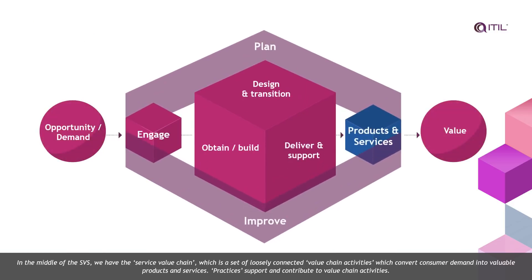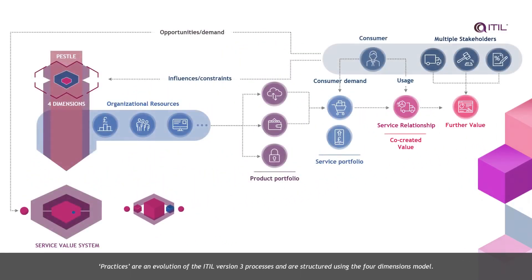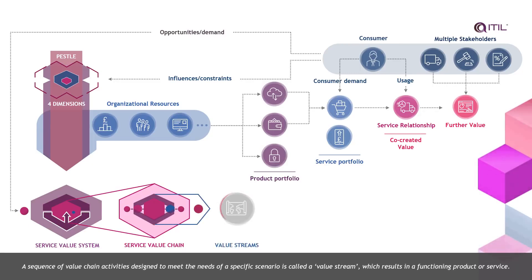In the middle of the SVS, we have the Service Value Chain, which is a set of loosely connected value chain activities that convert consumer demand into valuable products and services. Practices support and contribute to value chain activities. Practices are an evolution of the ITIL version 3 processes and are structured using the four dimensions model. A sequence of value chain activities designed to meet the needs of a specific scenario is called a value stream, which results in a functioning product or service.